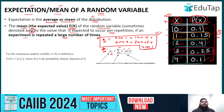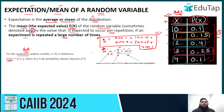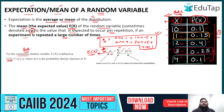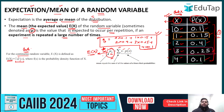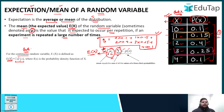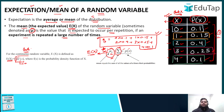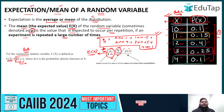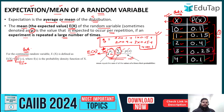This applies to the discrete variable where values are defined, not intervals. For a continuous random variable, integration is used: E(X) equals integration of x multiplied by fx dx. In our exam, there are no questions on continuous random variables, so integration concepts are not required. The discrete formula is the most important one for expectation or mean of a random variable.